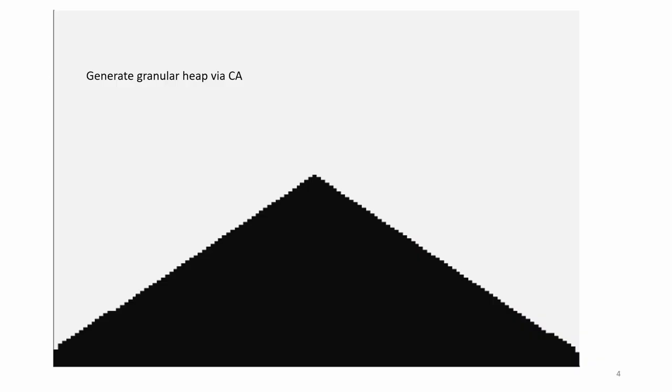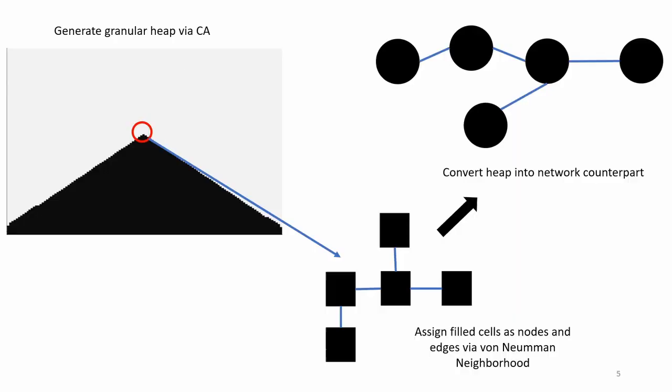In our work, we create a heap via CA. This heap is then converted into a network where nodes represent the granular particles and the edges are the neighboring particles.